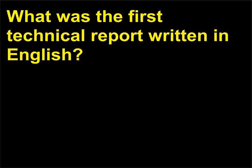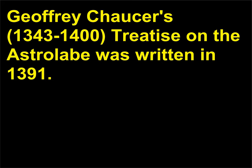What was the first technical report written in English? Geoffrey Chaucer's, 1343–1400, Treatise on the Astrolabe was written in 1391.